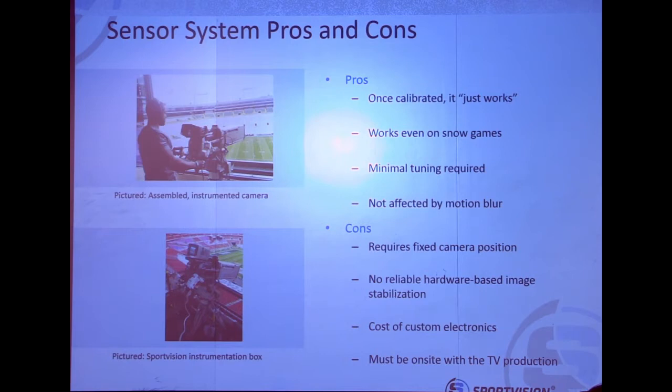The camera calibration itself is not affected by motion blur. At the snap of a ball, especially on a pass play, the cameraman will whip that camera around really, really fast. You'll see natural motion blur in the graphics, which is by design. But the camera data — all the camera parameters — aren't affected by that. So we're kind of insulated from those types of things for free with sensors.